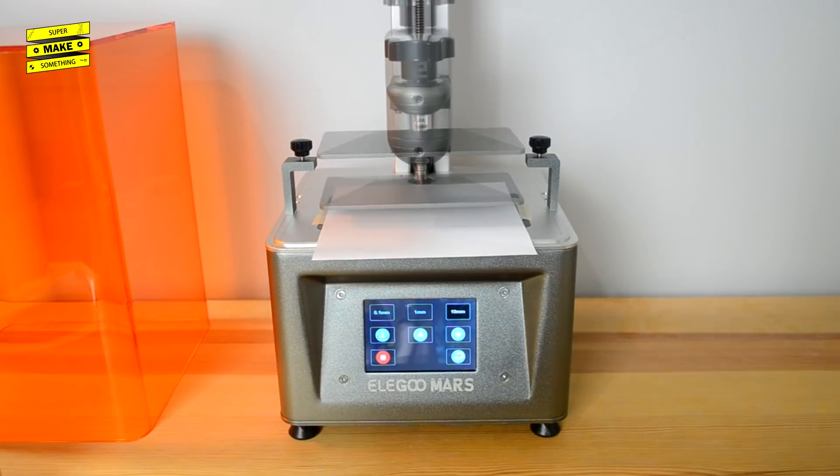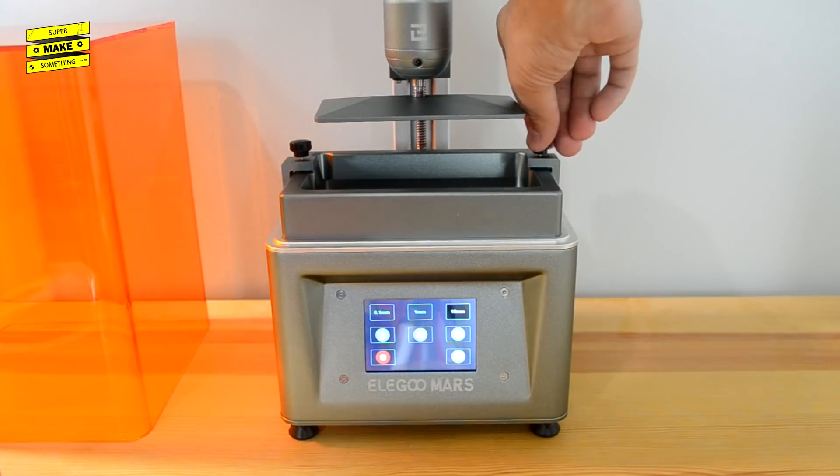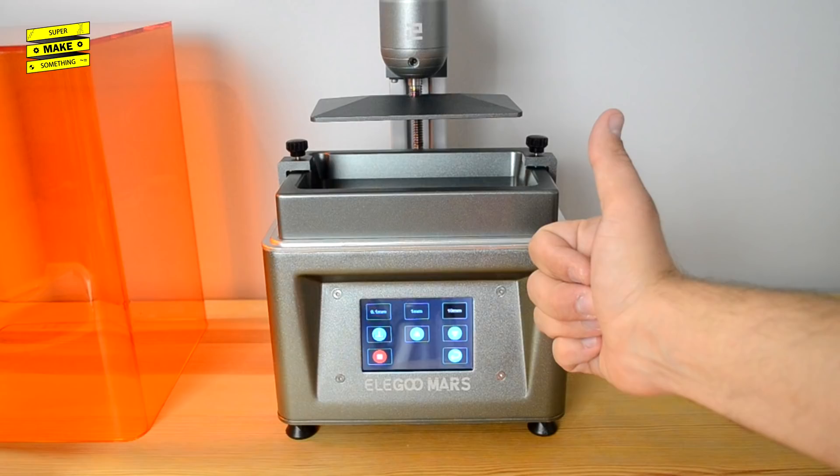Finally, I used the jog controls to move the carriage back up, slid the printing vat back into place, and tightened the two thumbscrews. The printer was now set up and ready to start printing.